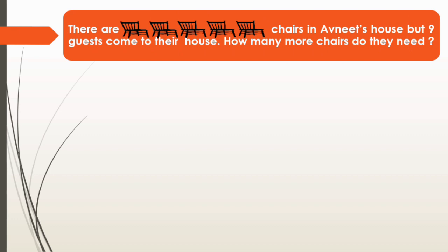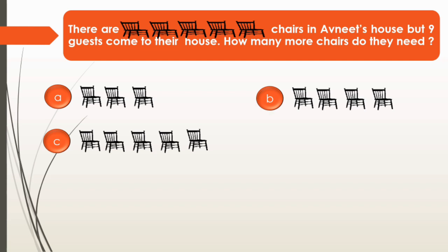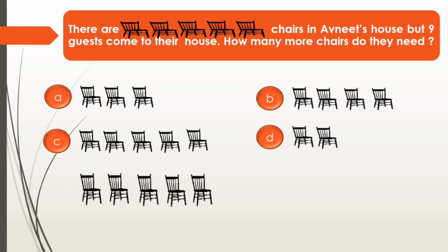Here is our next question. There are 5 chairs in Avneet's house but 9 guests came to their house. How many more chairs do they need? We have 4 options. Option A: 3 chairs. Option B: 4 chairs. Option C: 5 chairs. Option D: 2 chairs. Let's solve.